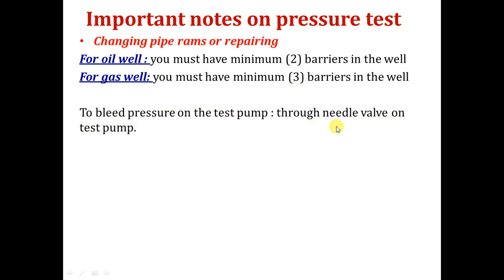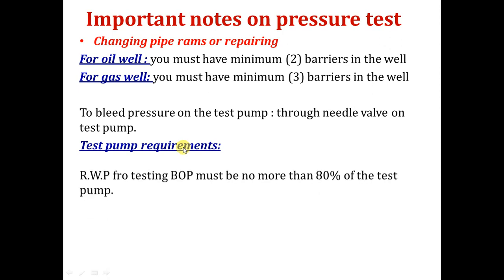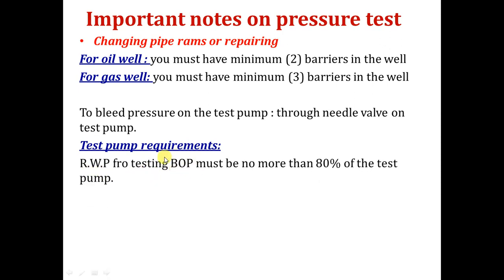To bleed pressure for the test pump: through the needle valve of the test pump. What is the test pump requirement? Very important in the IWCF: the rated working pressure for testing the BOP must be no more than 80% of the test pump rating. For example, if you are testing a 10K or 15K BOP, the minimum required pressure for the pump must be 15K divided by 0.8, which gives you approximately 20K or more. So the BOP test pressure must be at least 80% of the pump rating.